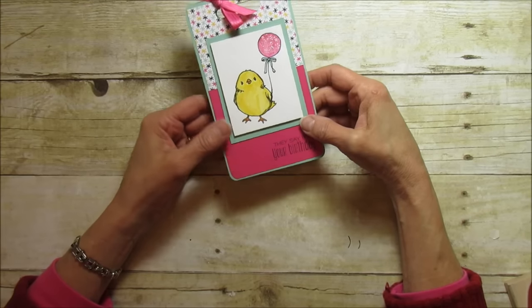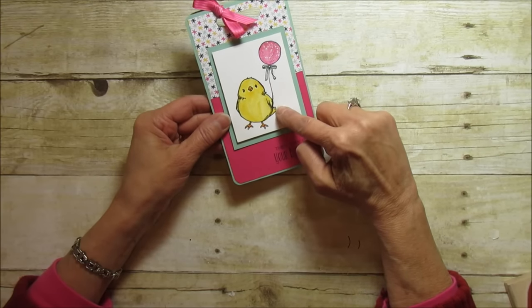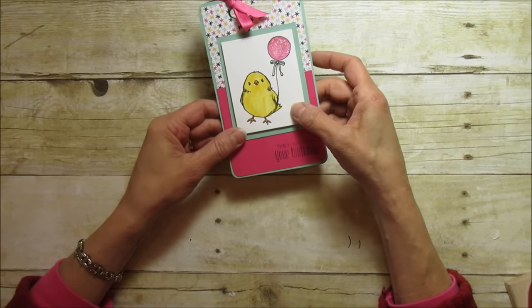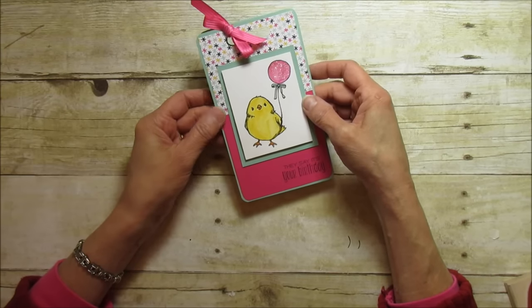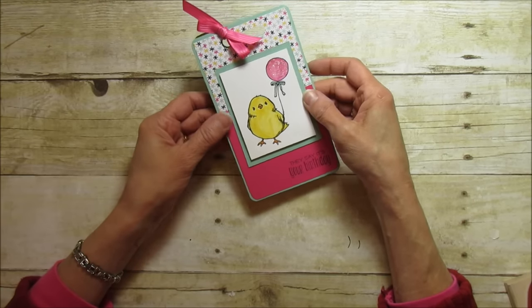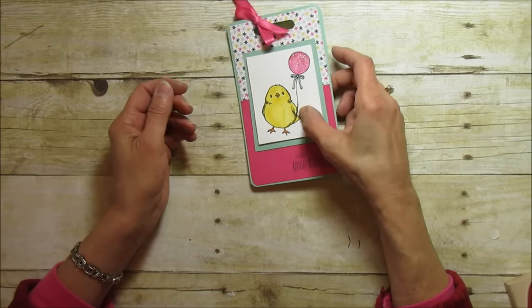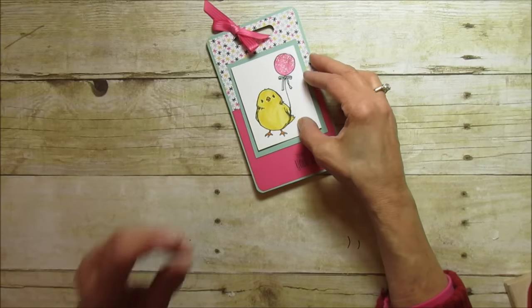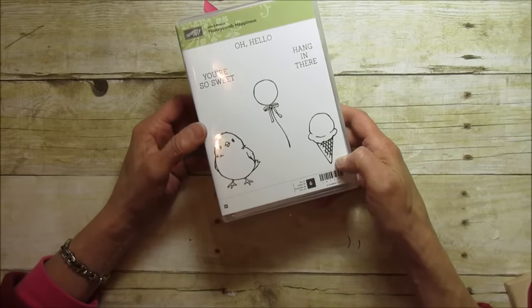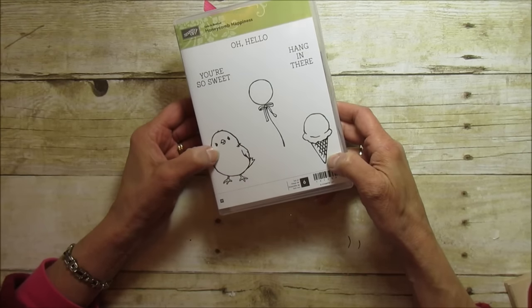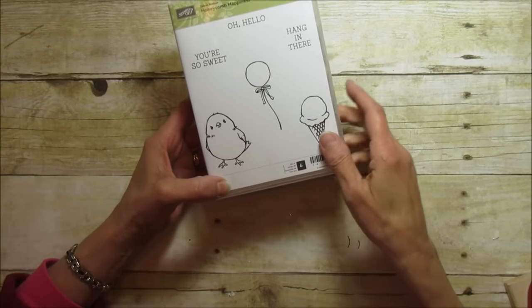This little bird is one of our free choices in our celebration catalog. You know that the occasions catalog is now live so you can order from the occasions or annual catalog. If you order $50 you can choose this little stamp and it's super cute. This is the stamp, it's called Honeycomb Happiness. It's one of my favorite celebration because I love him and I like the balloon also.